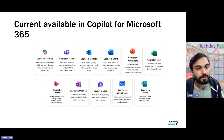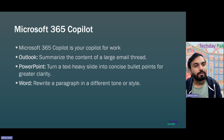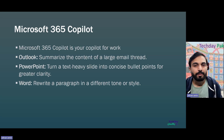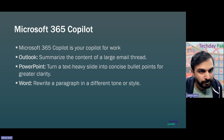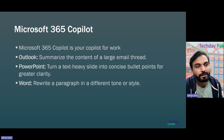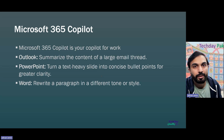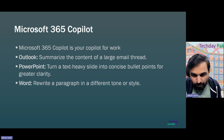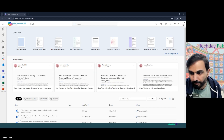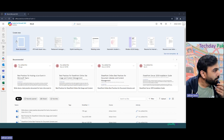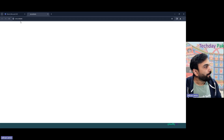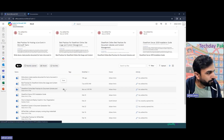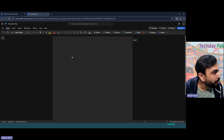Microsoft 365 Copilot combines the power of large language models with your data in Microsoft Graph and Microsoft 365 apps, and turns your words into powerful productivity tools. For example, in Outlook you can summarize a large email thread. Let me share a demo tenant from Microsoft. I have a Word document open here with a couple of documents created.